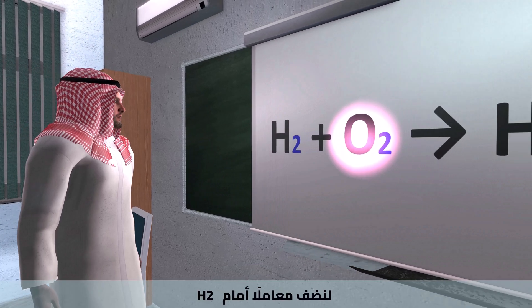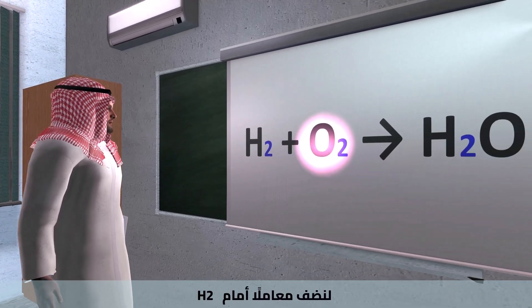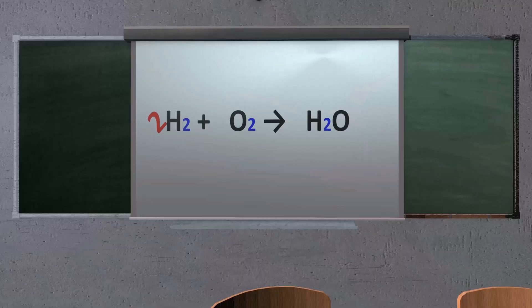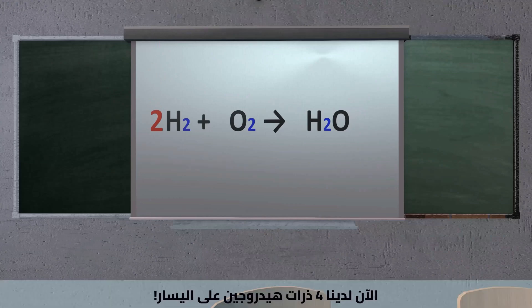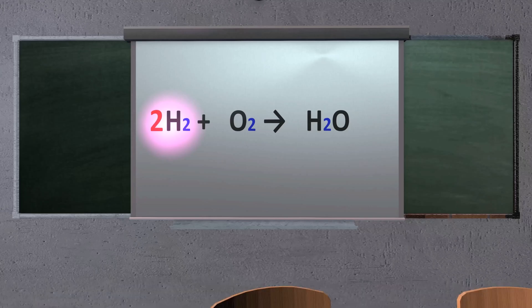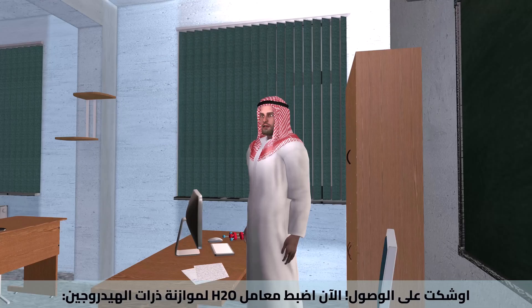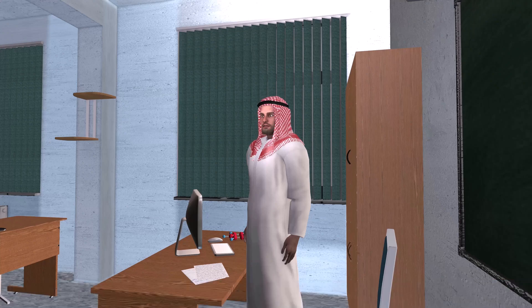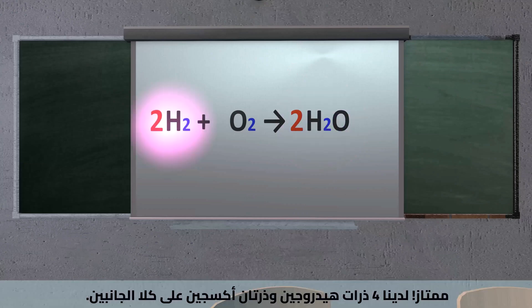We can't change the chemical formulas, but we can adjust the number of molecules involved. Let's add a coefficient in front of the H₂: 2H₂ plus O₂ produces H₂O. Now we have four hydrogens on the left. Adjust the coefficient of H₂O to balance: 2H₂ plus O₂ produces 2H₂O.